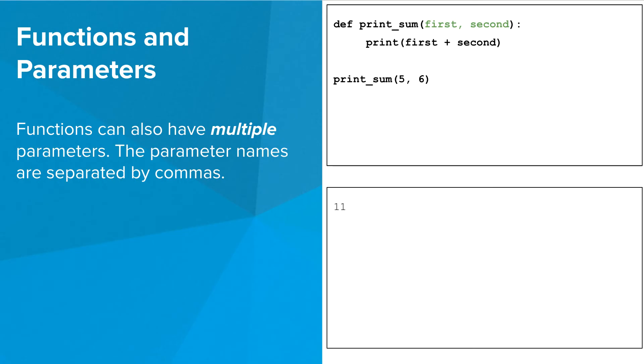Notice, too, that the first number corresponds to the value that goes into the first variable, and the second number goes into the second variable. Arguments always have to be in the same order that they're listed in the parameters.